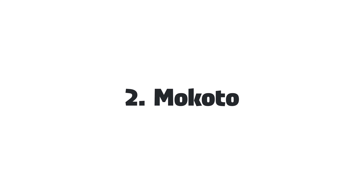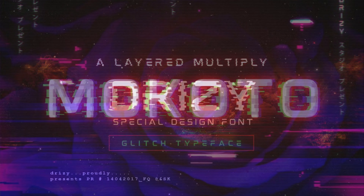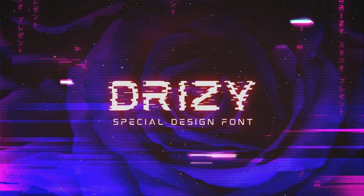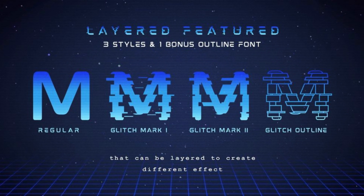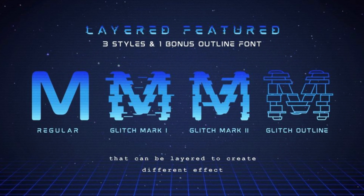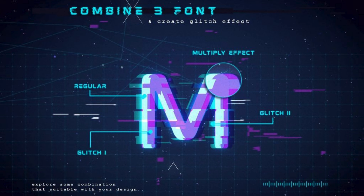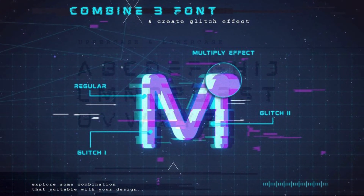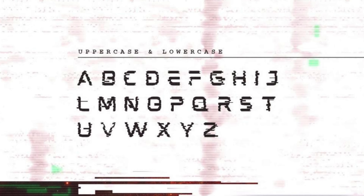2. Makoto. You can customize the glitch effect you're looking for in this layered typeface by Drizzy. With four styles — regular, glitch mark 1, glitch mark 2, and glitch outline regular — feel free to recolor, modify, or blend until you get the exact texture and outcome you need.